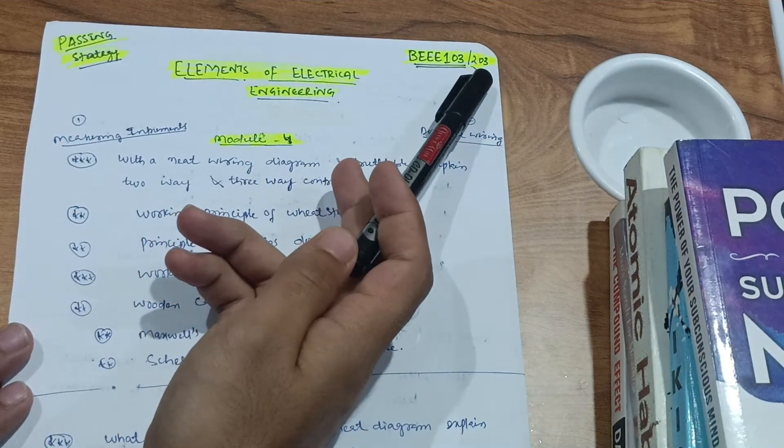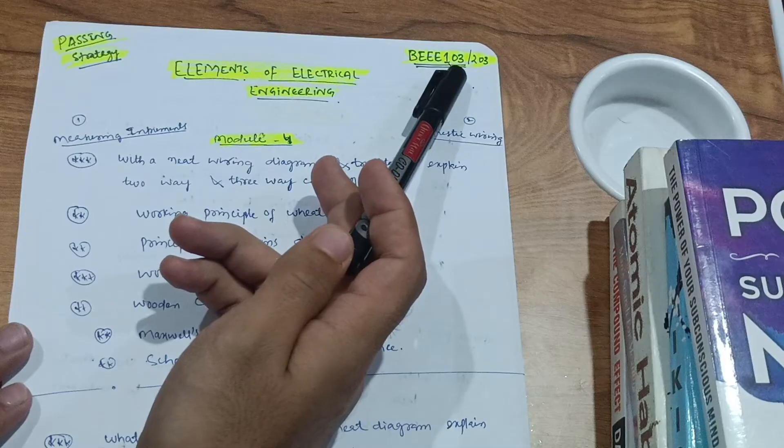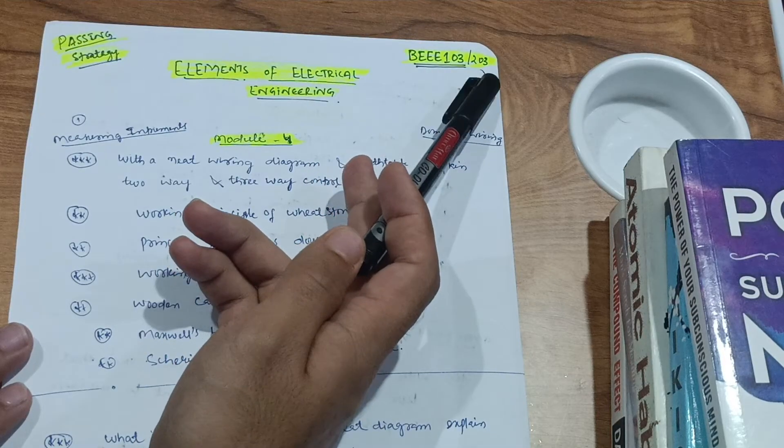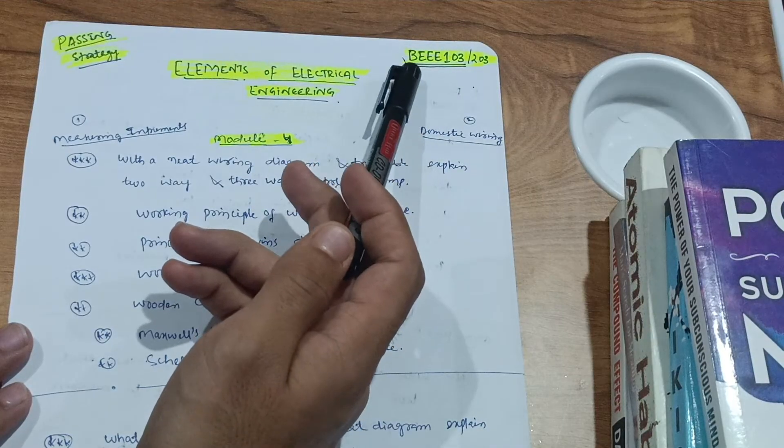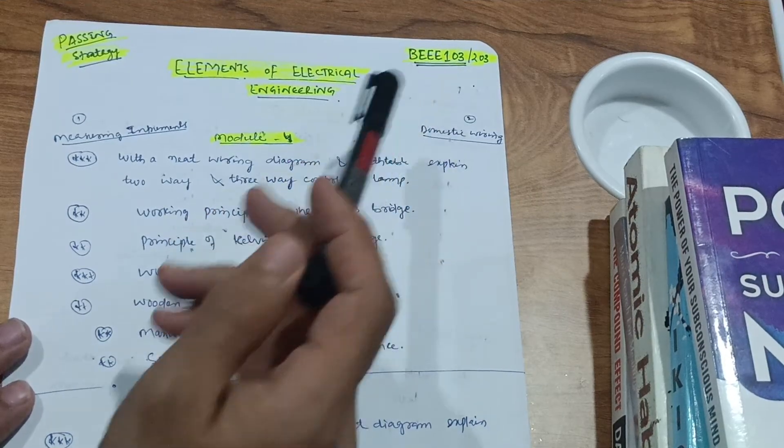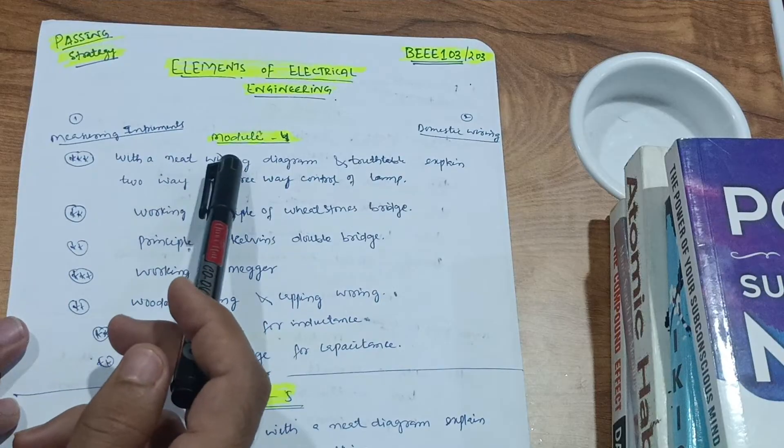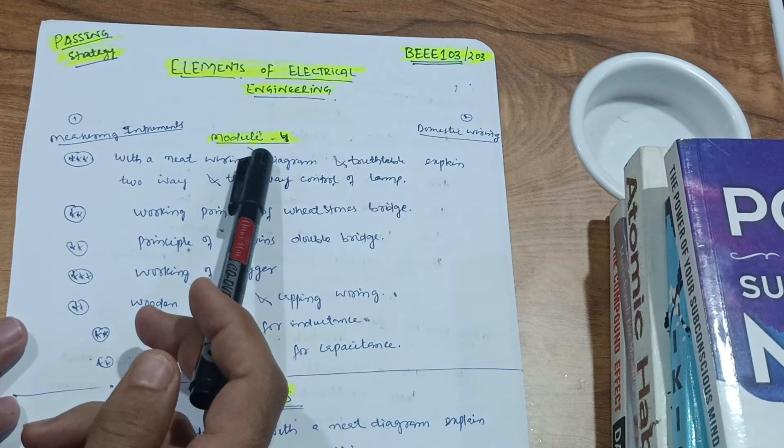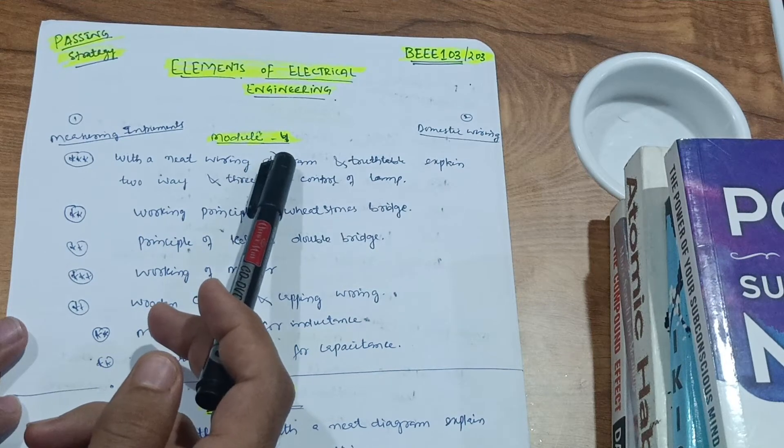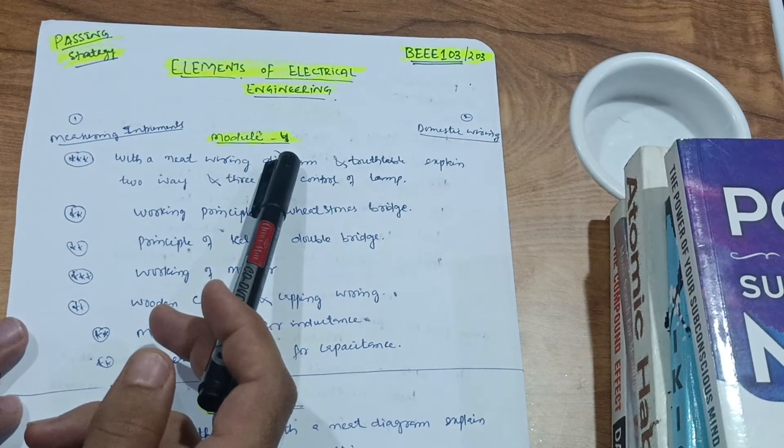This is in the first semester third subject and second semester third subject. Probably you are in the second semester now, so definitely its code is B Triple E 203. Let me tell you some important questions which you have to cover in this particular subject so that you can easily pass this.